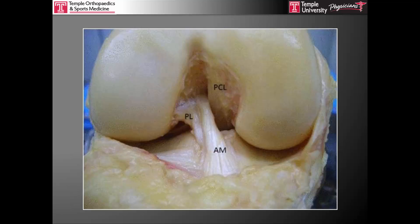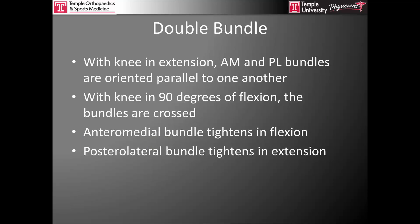From head on — the view most often seen arthroscopically — the anteromedial bundle sits over top of the posterolateral bundle when the knee is flexed. The anteromedial bundle takes its femoral origin slightly more superiorly, while the posterolateral bundle takes its origin slightly more inferiorly. With the knee in extension, the two bundles are oriented parallel to one another, but they cross when the knee is flexed. The anteromedial bundle is tighter in flexion, while the posterolateral bundle tightens in extension, making it the more functionally important bundle since most athletic activities occur at or near extension.